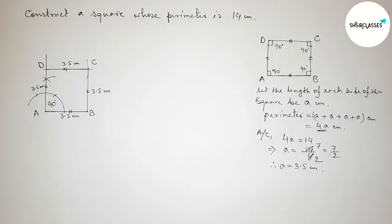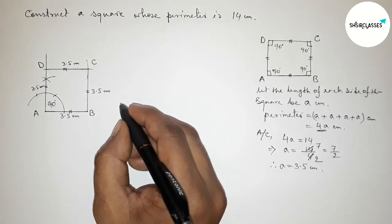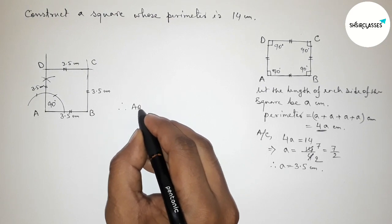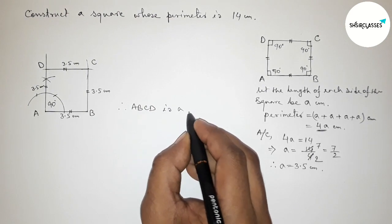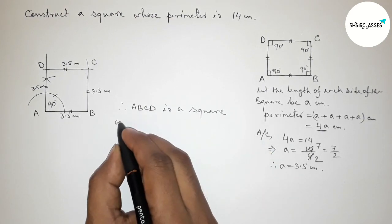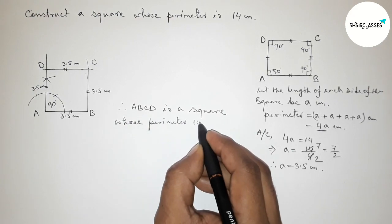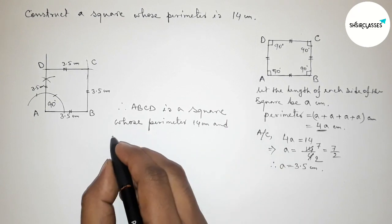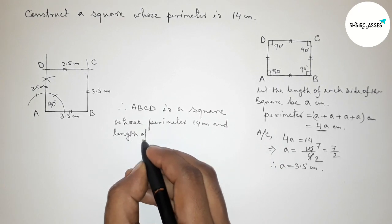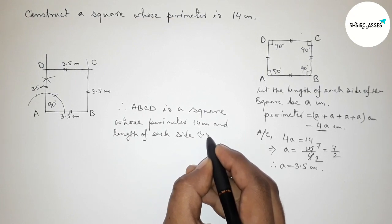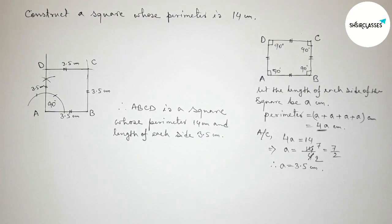All sides are equal: AB, BC, CD, and DA are each 3.5 centimeters. Therefore, ABCD is a square whose perimeter equals 14 centimeters and the length of each side equals 3.5 centimeters. Thanks for watching, please share it.